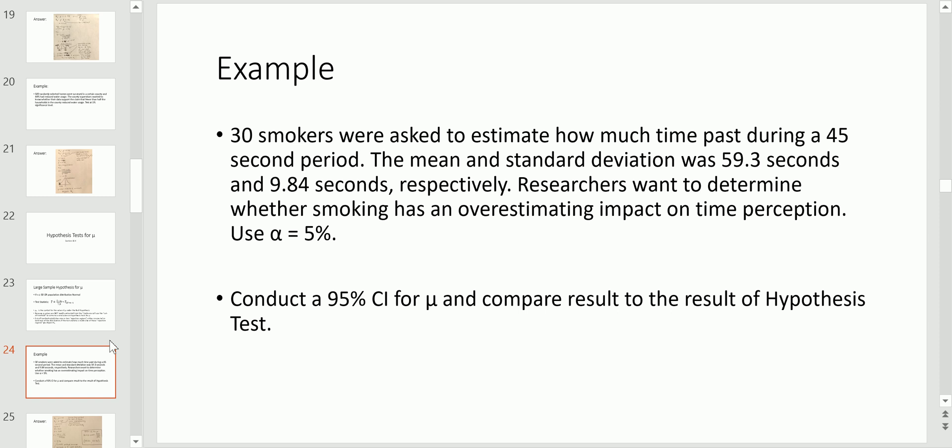Here's an example we're going to jump right in. We have 30 smokers and they were asked to estimate how much time passed during a 45 second period. The mean and standard deviation, so basically x bar and s, are given to us from the study. We don't have the raw data, we do have the summary statistics.